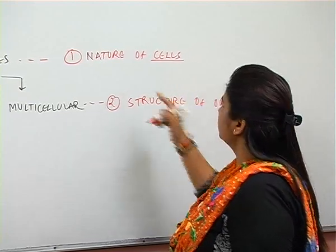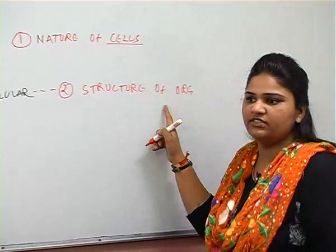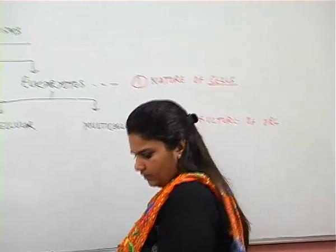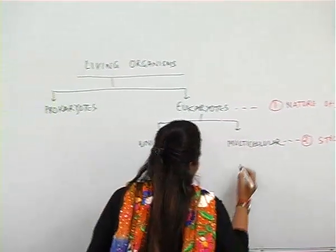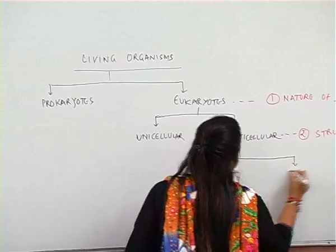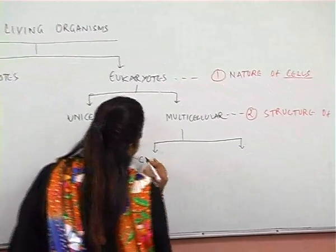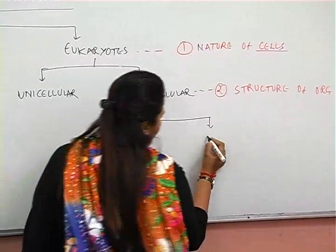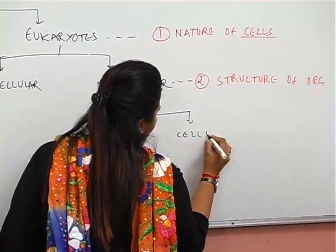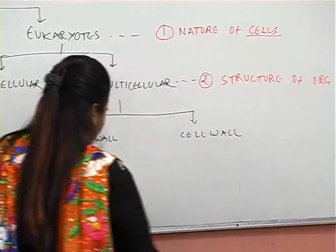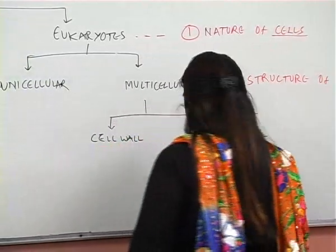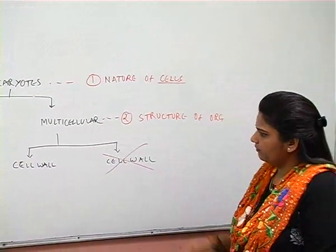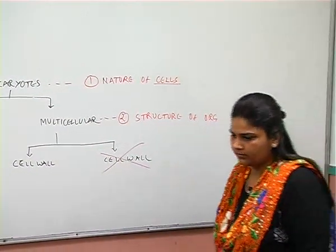So the first difference is in cells, and the second difference is in their structure. Now multicellular organisms are further classified into those having a cell wall and those not having a cell wall. The third step is based on the presence or absence of a cell wall.